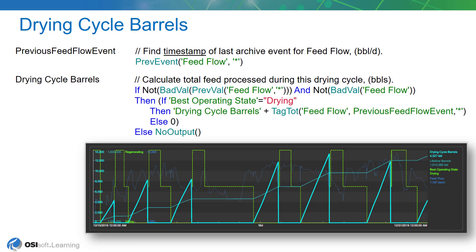In this calculation, the first step will be to check to see if the previous value for the feed flow, as well as the current value, are not bad. If they are bad, then we're going to execute the no output function, which basically means nothing happens, and we wait until the next time that this analytic gets executed to reevaluate.